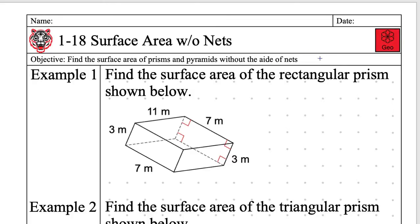Alright, so today's date is Thursday, October 3rd, 2019. Julian had his hand up before we even started recording, so he's going to be recording the objective of our 1-18 lesson surface area without nets. Go for it, Julian.